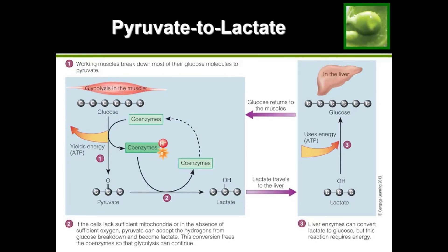This diagram shows the same thing in a little more detail. We started with glucose, made pyruvate, and when the coenzymes gave the hydrogens and electrons to pyruvate, we ended up with our lactate structure. Then we send lactate to the liver, and the liver converts lactate back into glucose so that we can go through this process over again.